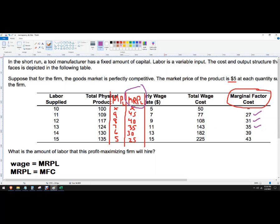39 and 30, no. So the amount of labor this profit-maximizing firm is going to hire is going to be 13 workers or 13 hours or however the number of workers is supplied.